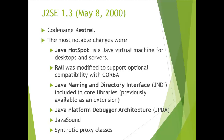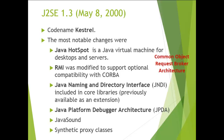The next version is J2SE 1.3, released on 8th May 2000, with the code name 'Kestrel'. The most notable changes were: Java HotSpot JVM for desktop and servers, RMI modified to support optional compatibility with CORBA (Common Object Request Broker Architecture), Java Naming and Directory Interface included in the core library, Java Platform Debugger Architecture, and Java Sound classes.